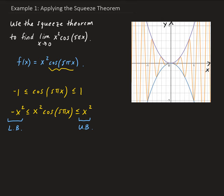Over here you can see in the graph, the graph in orange is our function f, which is x squared times cosine of 5 pi x. And you can see here, this is our parabola x squared, and this is the minus x squared function.